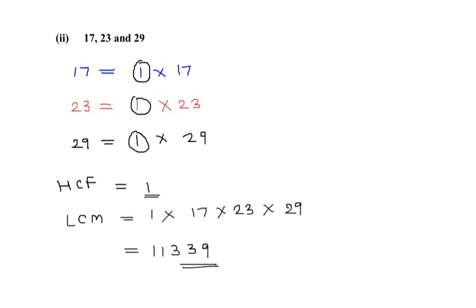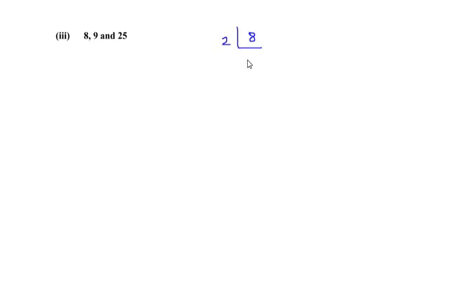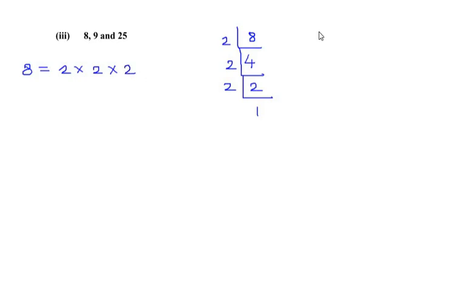Now the last sub-part: find the LCM and HCF of 8, 9, and 25. Starting with 8: 2 times 4 gives 8, then 2 times 2 gives 4, then 2 times 1 gives 2, so the factors of 8 are 2 × 2 × 2. For 9: 3 times 3 gives 9 and 3 times 1 gives 3, so the factors of 9 are 3 × 3.